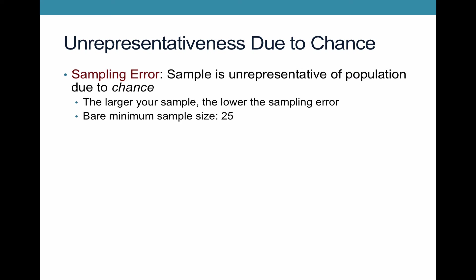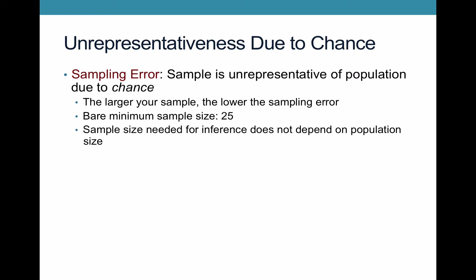A key point is that the sample size you need for inference doesn't actually depend on the population size — this is the beauty of the law of large numbers. It's key to have a fairly large sample, but even if you have a population of 300 million people, it doesn't mean you need to sample 100,000 in order to get good inferences. You can sample just 1,000 and make fairly accurate inferences from that sample.